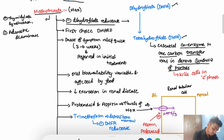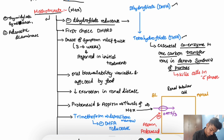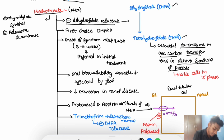Methotrexate is also an inhibitor of thymidylate synthase. It will also inhibit adenosine deaminase.